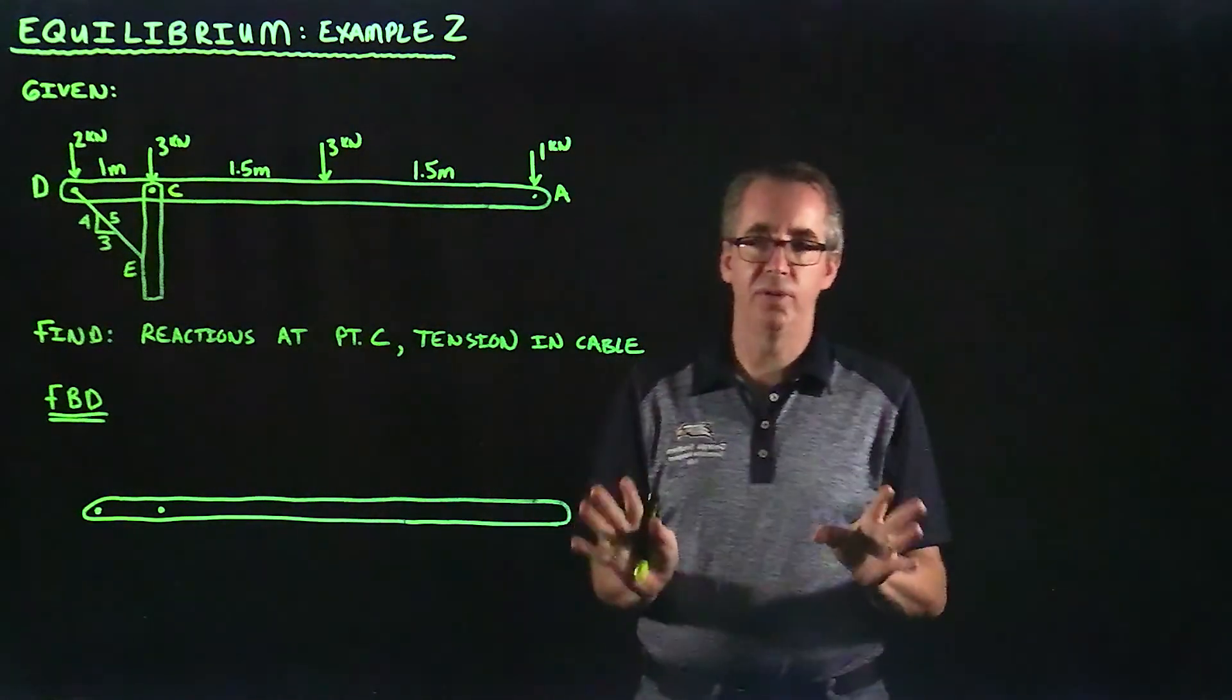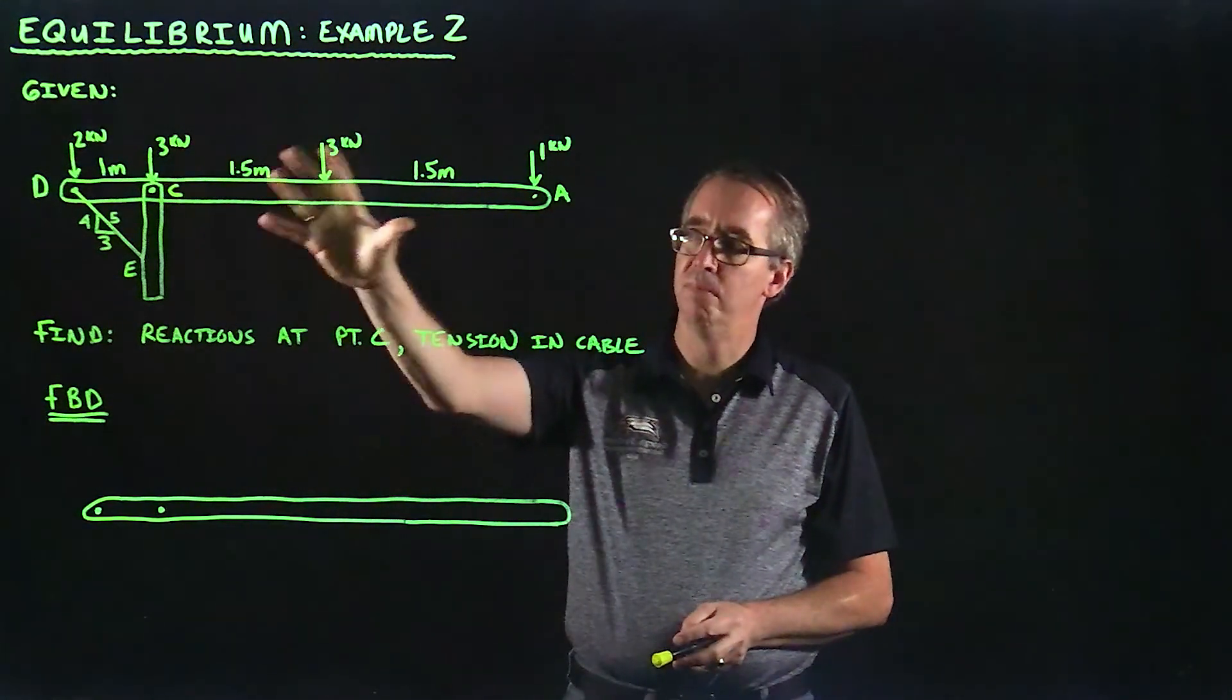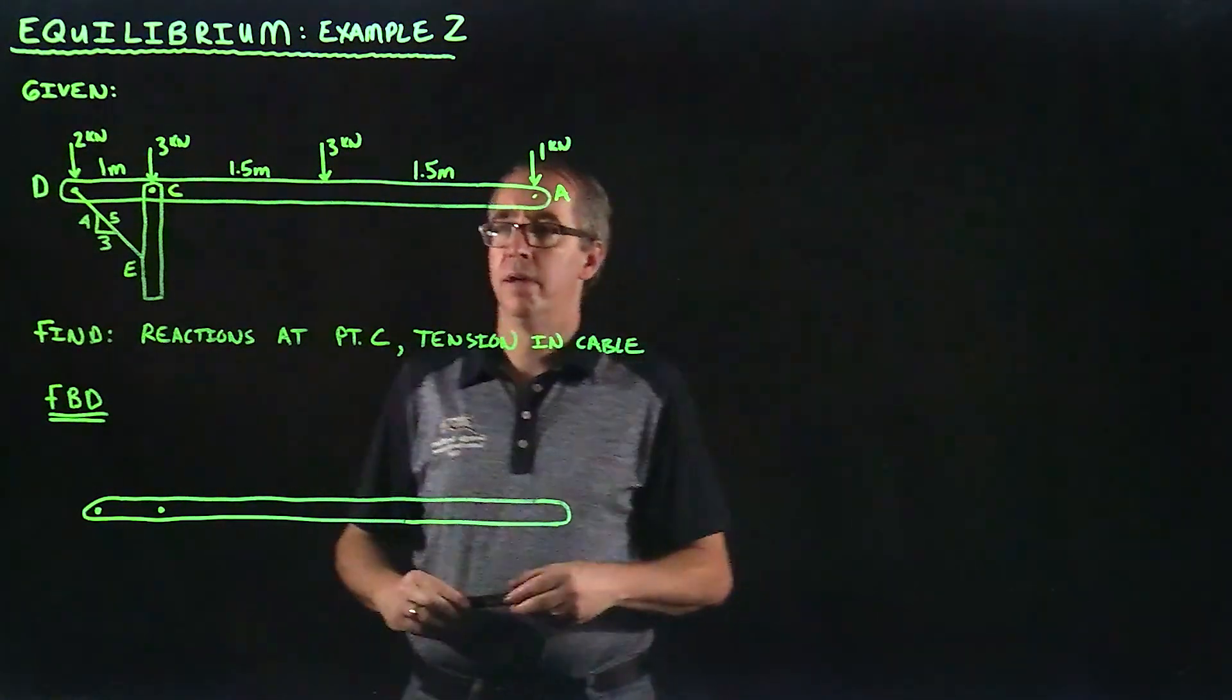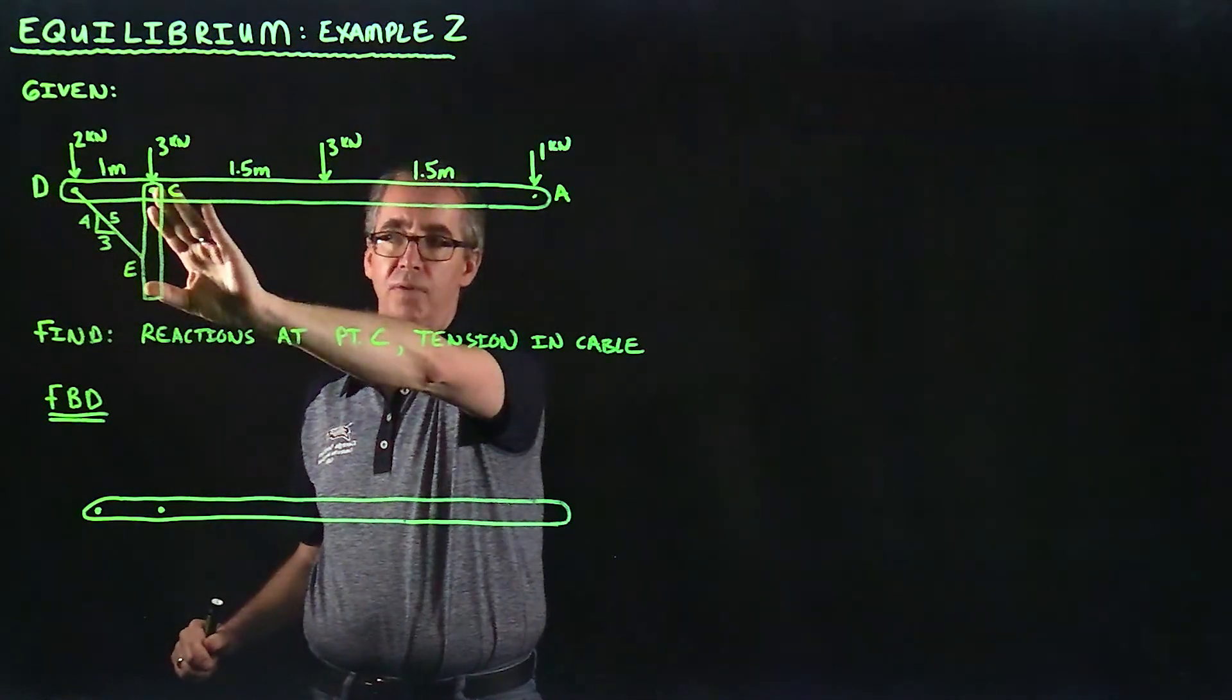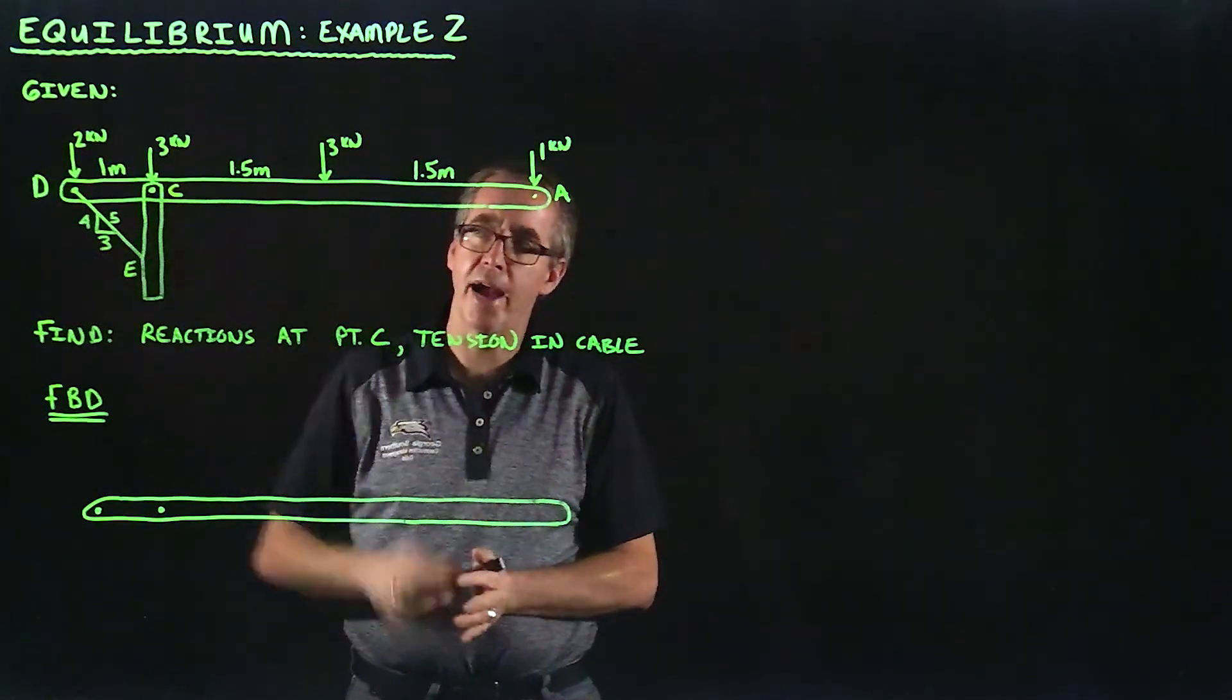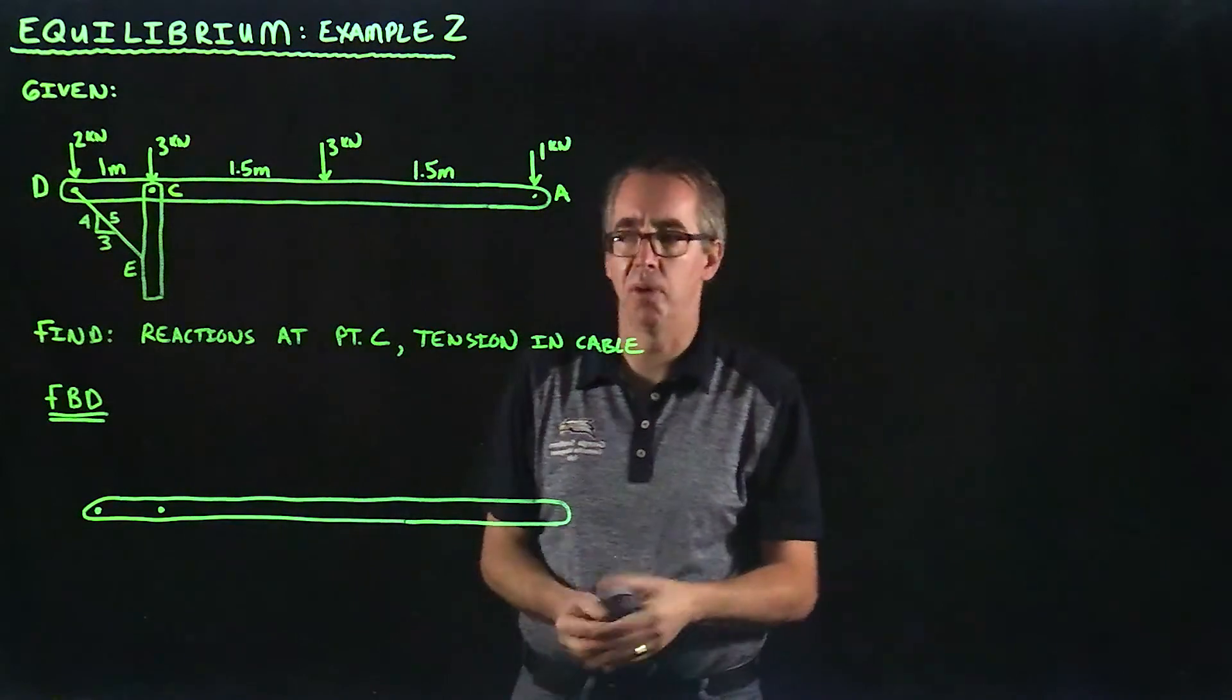The first place we start with any of these equilibrium problems is a free body diagram. We're going to take this complex problem and simplify it. When I do the free body diagram, I'm going to focus predominantly on the object that we're analyzing. In this case, I'm focused on the horizontal beam here. I'm not necessarily looking at this vertical support because what we're after is the tension in this cable and the reactions at that pin.